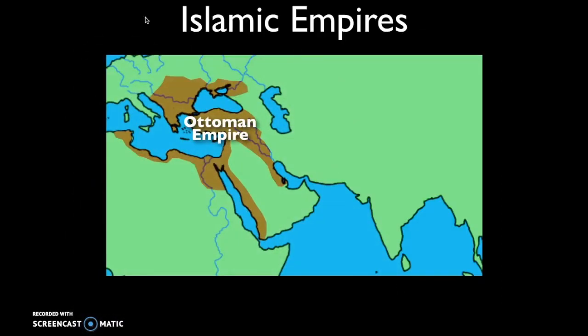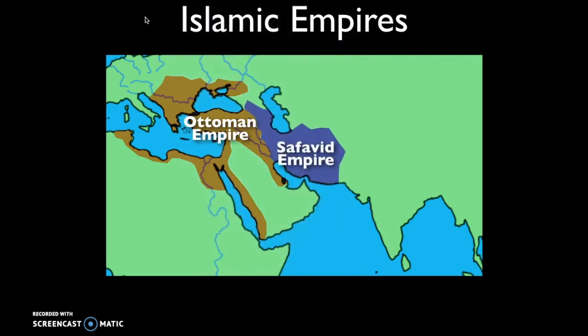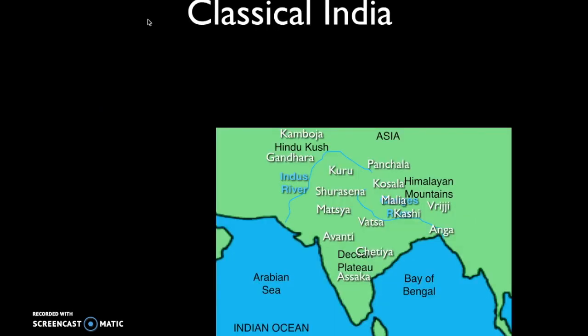In the last video we discussed the Ottoman Empire, located in the Middle East, North Africa, and parts of the Balkan Peninsula. We also discussed the Safavid Empire in Persia. Today we'll be focusing on the Mughal Empire in South Asia — the Indian subcontinent.